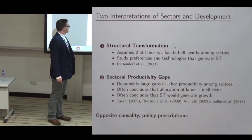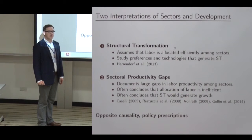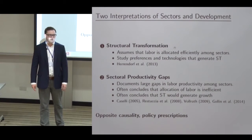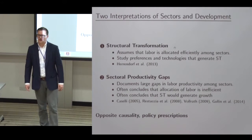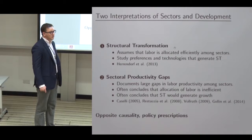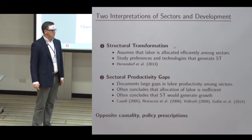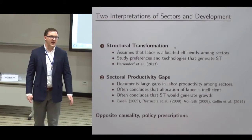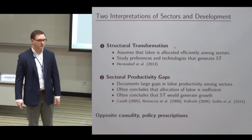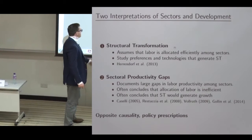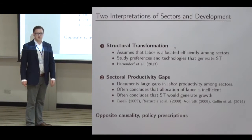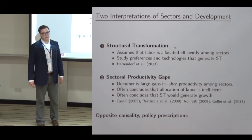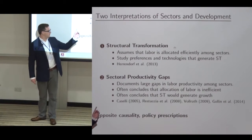At the same time, there's a second literature — the sectoral productivity gap literature. People in this literature start with the data and document large gaps in labor productivity, specifically value added per worker or value added per hour between sectors. The most common split compares agriculture to non-agriculture, finding reported value added per worker in most poor countries is five to ten times higher in non-agriculture than in agriculture. Many papers in this literature conclude that this implies the allocation of labor is inefficient, and that policies promoting structural transformation would induce growth.